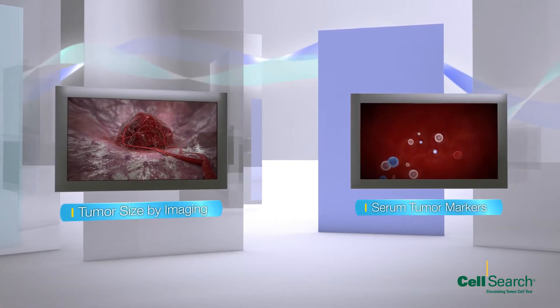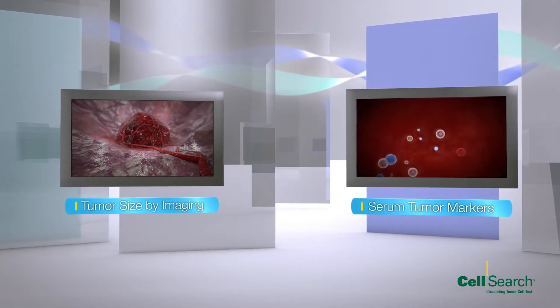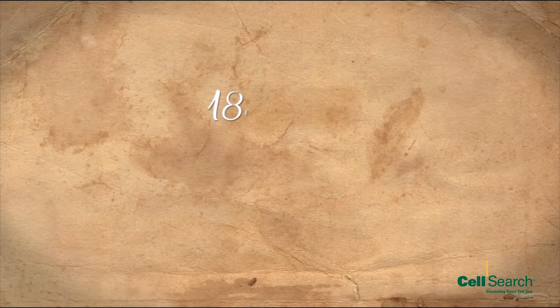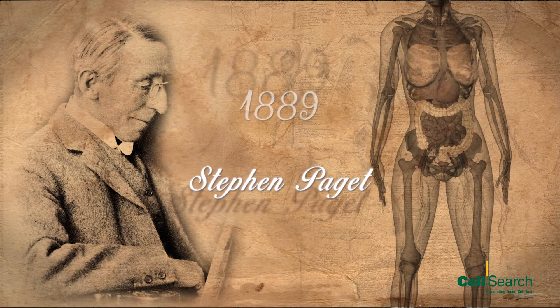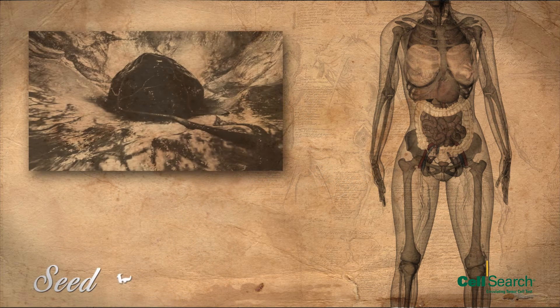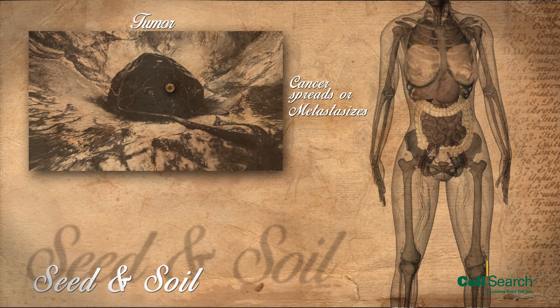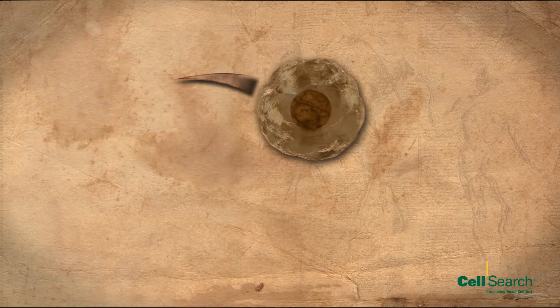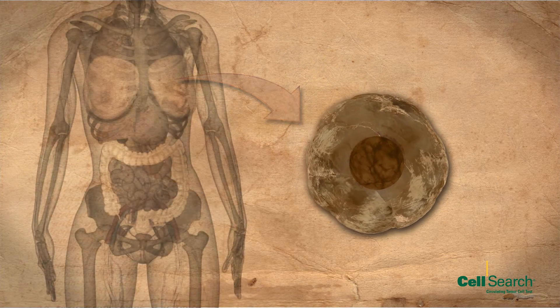To optimise patient care, it's important for doctors to have powerful tools that provide accurate prognostic information for each patient at any time during therapy. In 1889, a surgeon named Stephen Padgett proposed the seed and soil hypothesis to describe the mechanism by which cancer spreads or metastasises around the body. The seed refers to cancer cells that break away from a primary tumour in one tissue and eventually establish themselves and begin to grow in the soil of another tissue.